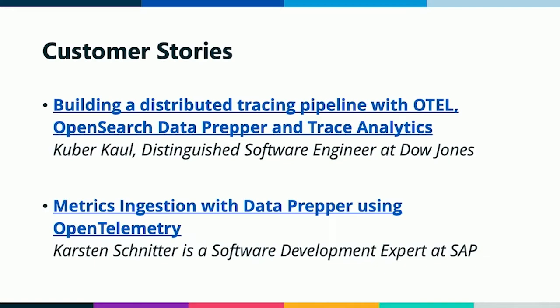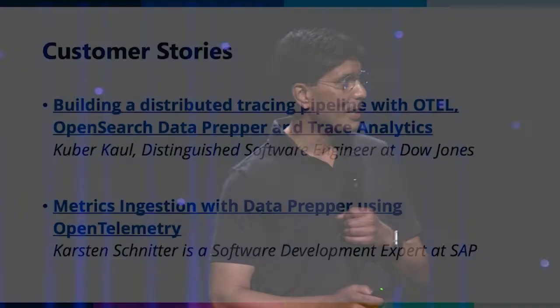The first story is from Dow Jones. They built out a distributed tracing pipeline with Data Prepper using Jaeger instrumentation, and they wrote an excellent blog post covering all the configurations they had to do with sampling and more. The metric processor was actually a contribution from SAP — we didn't develop it. They wrote a blog post as well talking about how they did it, why they did it, and the capabilities in terms of collecting metric data from the OpenTelemetry Collector. I encourage all of you to check them out, and hopefully next year we can see some other stories from the great folks at this conference.